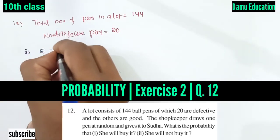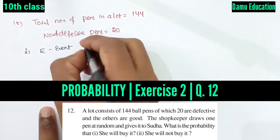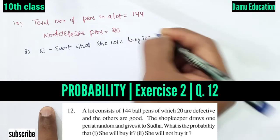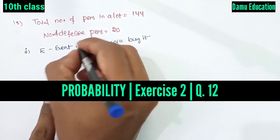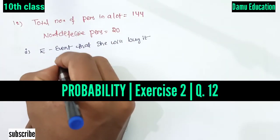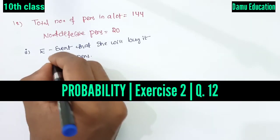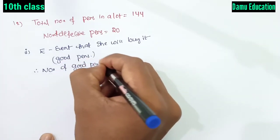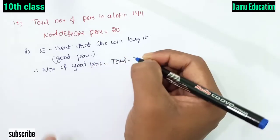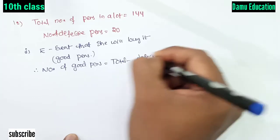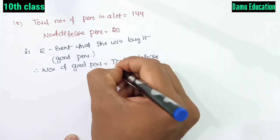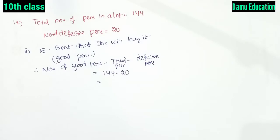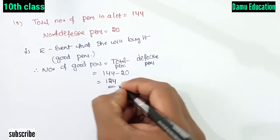Let E be the event that she will buy it — that means good pens. Therefore, the number of good pens equals total pens minus defective pens: 144 minus 20, which gives us 124. So there are 124 good pens.